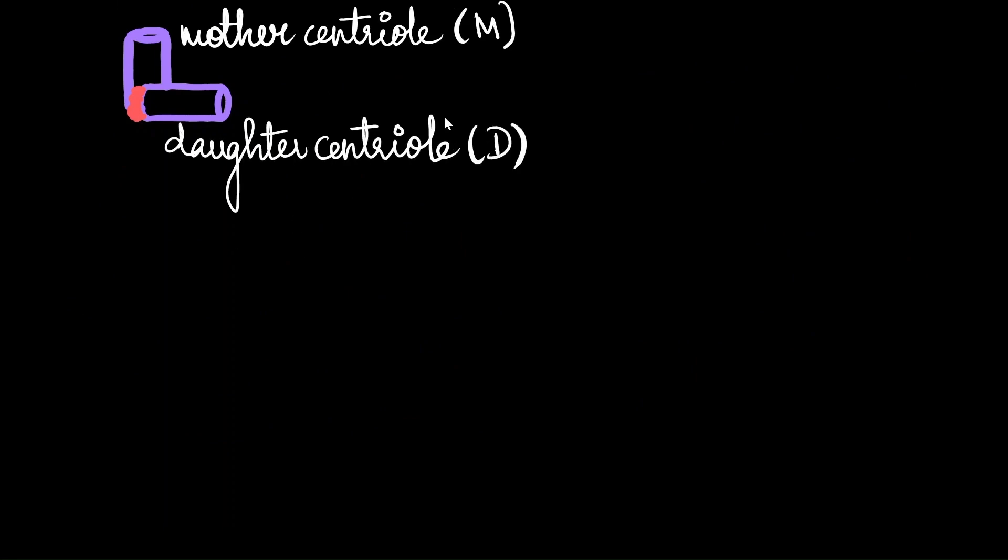During cell division, we have our mother and daughter centrioles. Let's designate them as M and D for ease. What happens is that the connecting fibers between them, which are usually tightly linked, become a little bit loose. This helps in the subsequent steps.